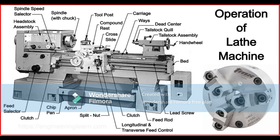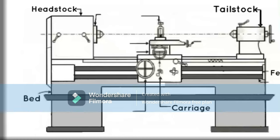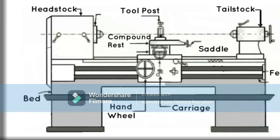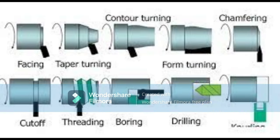All lathes consist of several key components including the bed, which is the base of the lathe and provides support for the other components; the headstock, which houses the motor and drive system; the tailstock, located at the opposite end of the bed to support the other end of the workpiece; and the cutting tool, used to remove material from the workpiece. Lathe machines are used in manufacturing operations such as turning, facing, drilling, and tapping.